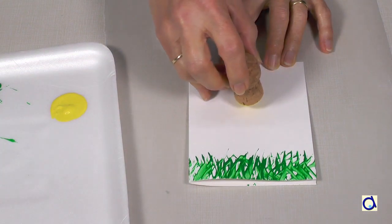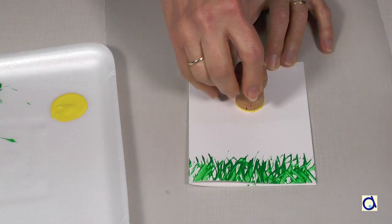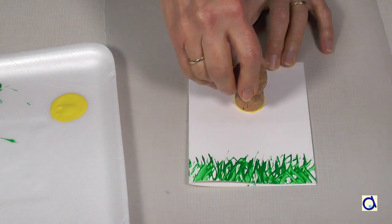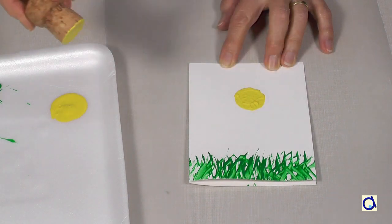Then take a sparkling wine cork and dip it in a colour of your choice. I decided to use yellow paint to form the heart of the flower.